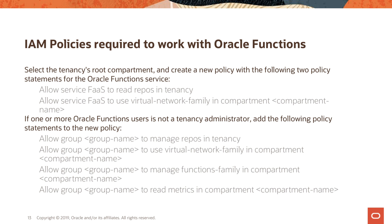Regarding IAM policies required to work with Functions, you need to write at least two policies in the tenancy's root compartment. The first is about reading the repositories where the Docker images are stored, and the second is about using the virtual network family in the compartment so it can leverage the VCN, subnets, and their resources. If you are not part of the administrator group, you can create a specific group of function users and write a set of four policies for that group. Admin group members only need those two policies.